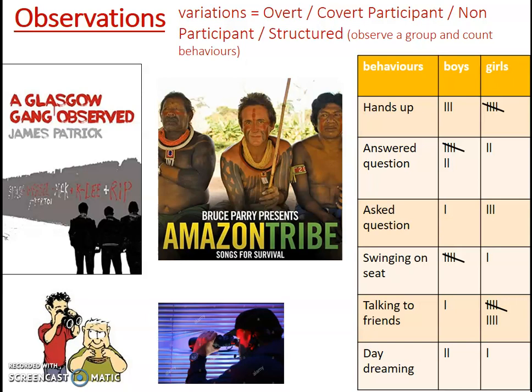You can tell Bruce Parry has taken part in the research because he's painted himself in the tribal markings and he's dressing like the tribe members. However, it's clear he's not able to go undercover and be covert because of his physical characteristics — he's white and not from the ethnic background of the rest of the tribe. So they're all well aware that he's studying them, but he really immersed himself in their way of life to gain understanding of what it was like living as an Amazon tribe.